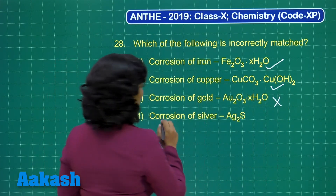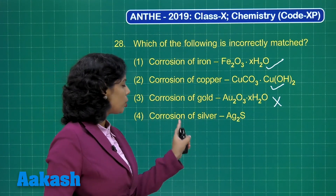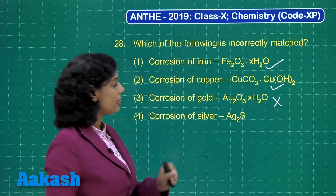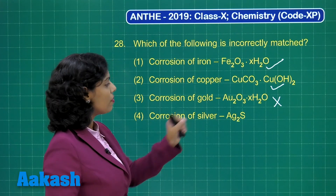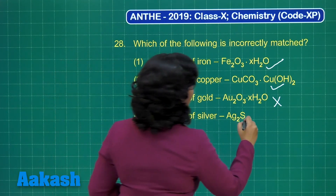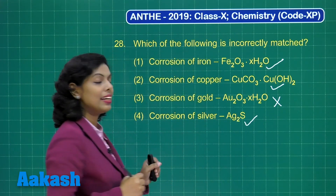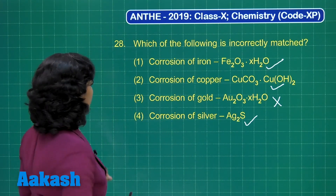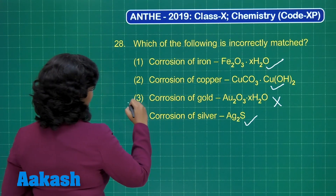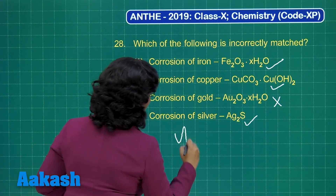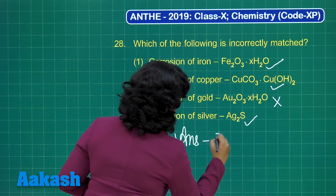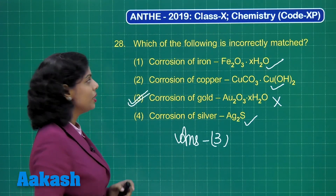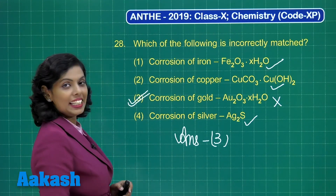Further, corrosion of silver: after corrosion of silver there is formation of a black colored compound, that is silver sulfide. This is also correctly given. What we need to find is the incorrectly matched option — that is option 3. So option 3 is definitely the correct answer for this question.